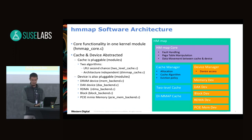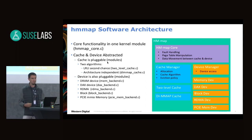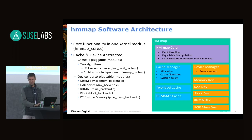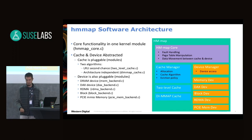HMMap is implemented as a core kernel module with a few plugins. One plugin defines the cache replacement policy — we implemented two algorithms: LRU second chance, similar to what's in the page cache, and a slightly more architecture-independent algorithm that doesn't rely on the access bit. On the backend, we support multiple backends: DRAM, standard DAX, RDMA, standard block device, and PCIe MMIO memory.